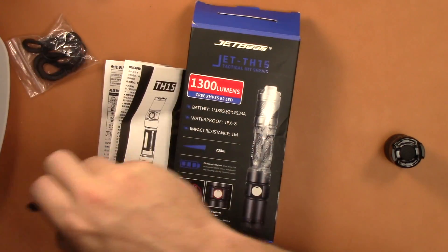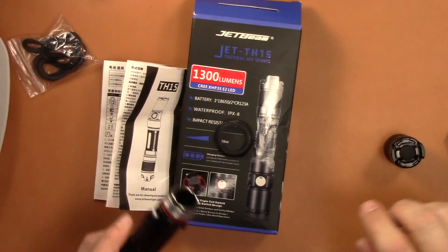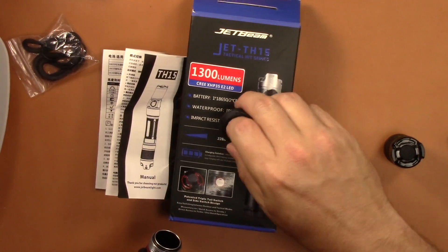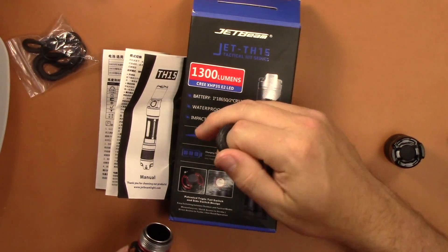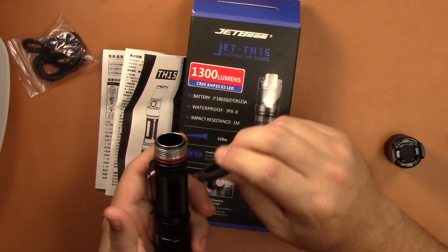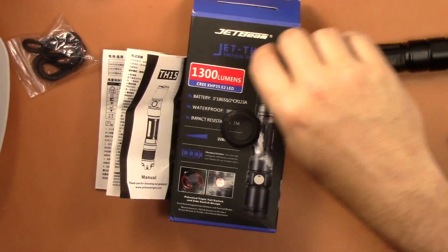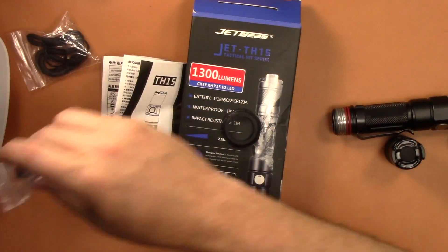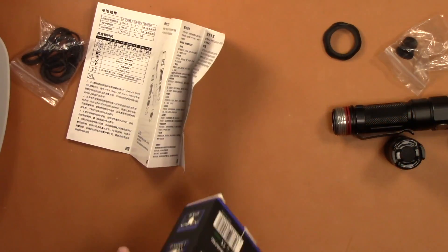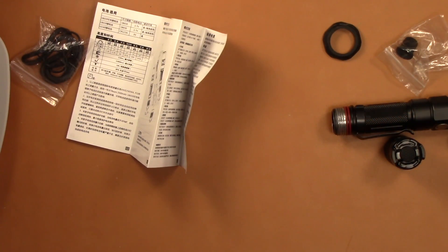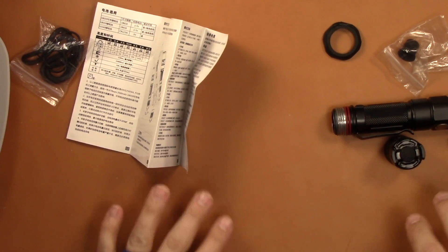It comes with a lanyard, it comes with a pocket clip. It doesn't come with a pocket clip attached. You have this ring here that you can put in place of the pocket clip if you're going to use the holster that's included. And you get an extra tail switch, which is nice. I don't know where that holster has left, but I don't use holsters anyway.